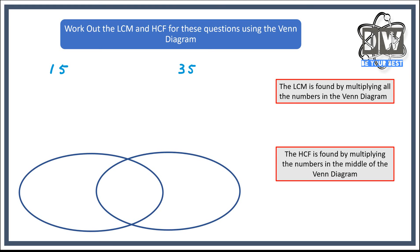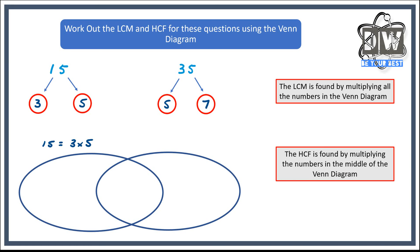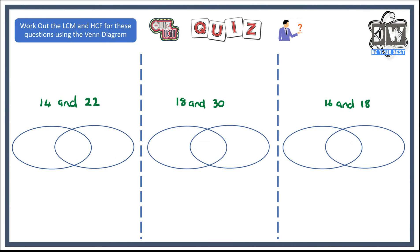Let's do the prime factor tree for 15: 3 times 5 — both prime, we can stop. For 35 it's tougher; we use 5 times 7, and both are prime so we're finished. Writing them down: 15 equals 3 times 5, and 35 equals 5 times 7. The shared number is 5, which goes in the middle of the Venn diagram, with 3 unique to 15 and 7 unique to 35. So LCM is 3 times 5 times 7 equals 105, and the highest common factor is 5.